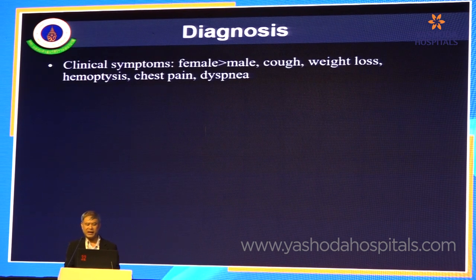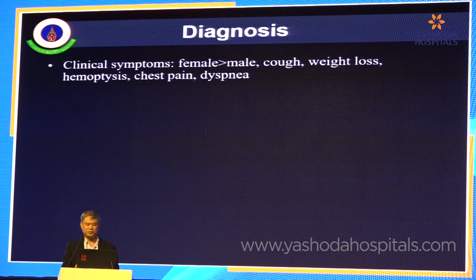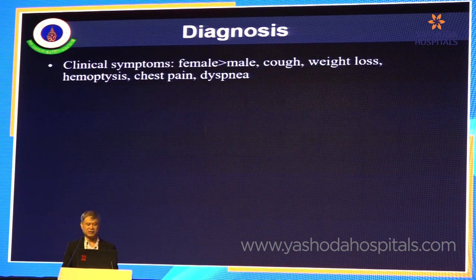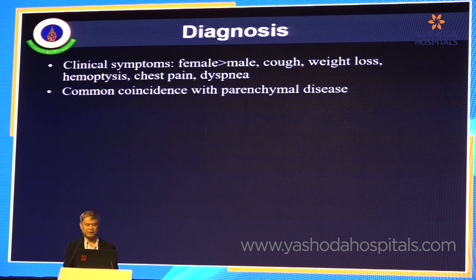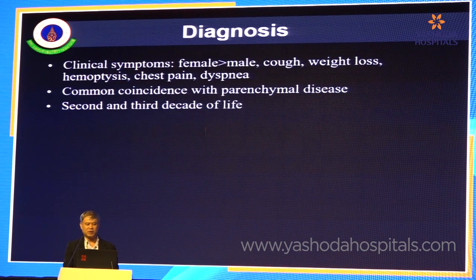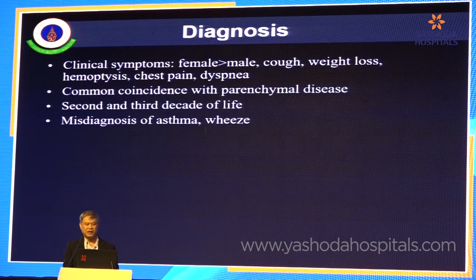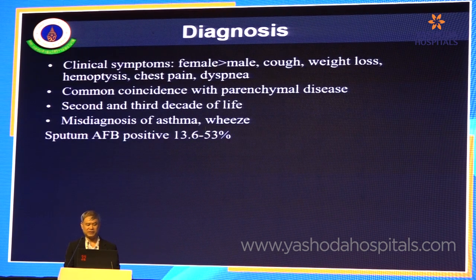To make a diagnosis clinically: females have a higher prevalence of this disease than males. Patients may present with cough, weight loss, hemoptysis, chest pain, or dyspnea. It commonly coincides with parenchymal disease, occurs in the second or third decade of life, and is frequently misdiagnosed as asthma because of wheezing.